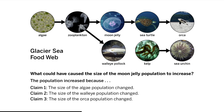In Chapter 2 we determined that an increase in the zooplankton population could have caused births in the moon jelly population to increase. We also determined that a decrease in the sea turtle population could have caused deaths in the moon jelly population to decrease. Either of these situations could have resulted in more births than deaths in the moon jelly population, which would cause the size of the population to increase.